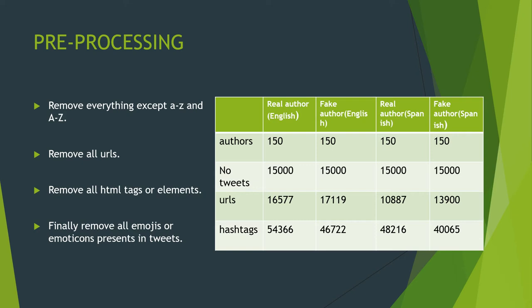In this chart, we can see that there are 150 real authors and 150 fake authors for English, and similarly 150 real and 150 fake for Spanish. Each author has 100 tweets, so the total number of tweets for real English authors is 15,000 and similarly for fake English authors, real Spanish authors, and fake Spanish authors.